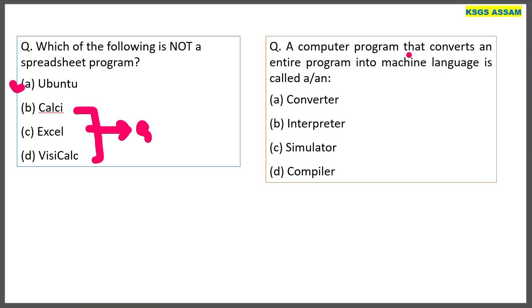A computer program that converts an entire program into machine language is called a compiler.